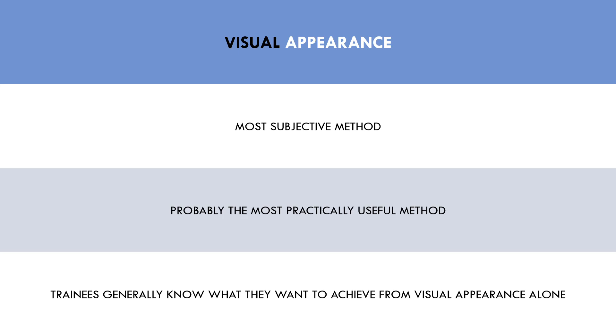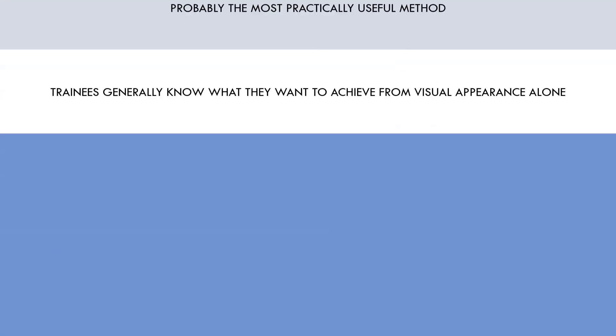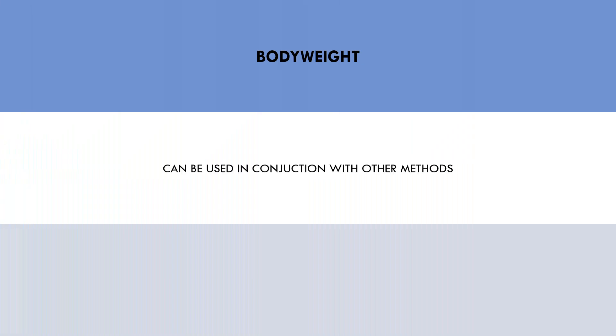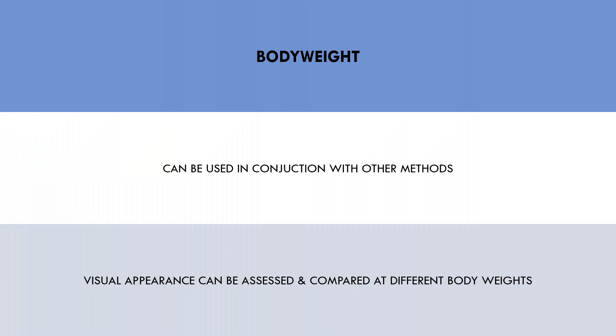The next method of assessing body composition is body weight. This is technically not a measure of body composition, but it can be a useful metric to use in conjunction with other methods. We can assess our visual appearance at different body weights, which allows us to compare our current physique relative to our previous physique at the same body weight over time.